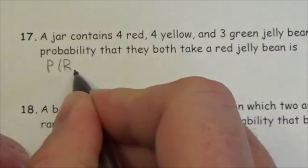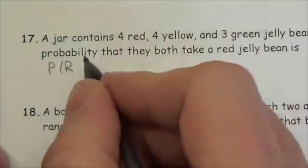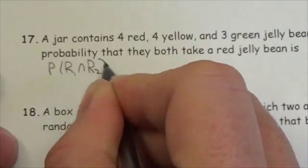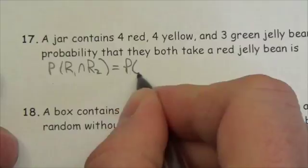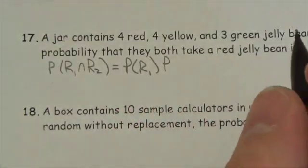of getting a red - basically what this is, we're assuming that two jelly beans are taken. What we're really looking at is what's the probability the first one is red and the second one is red. So that is the probability that the first one is red, and we're assuming they're eating these jelly beans,